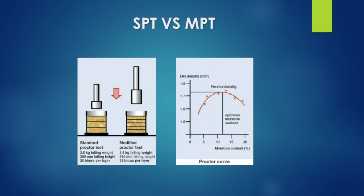From the compaction test, we find the dry density. The dry density can be found from the bulk density divided by one plus the water content.